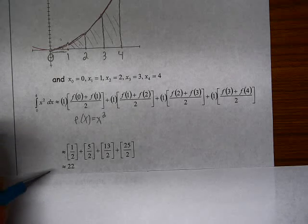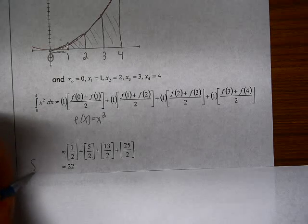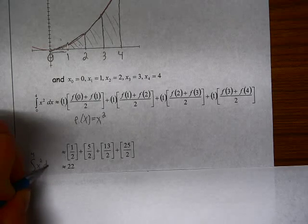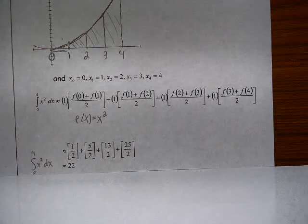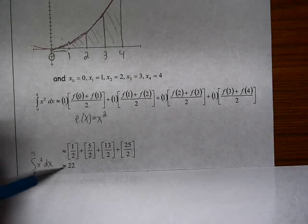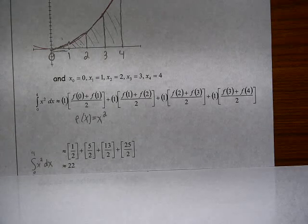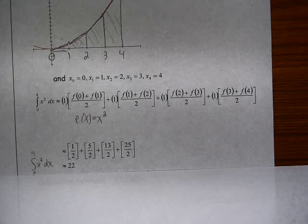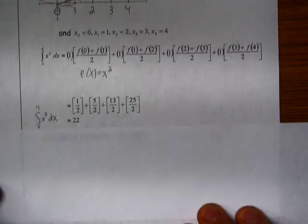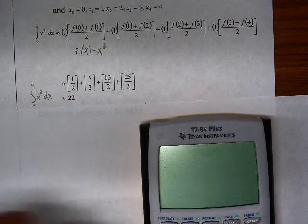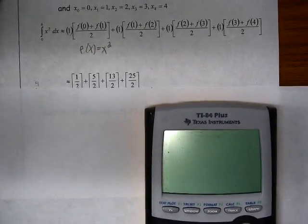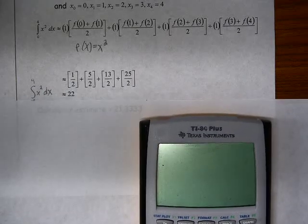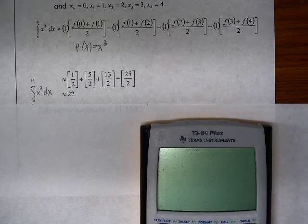So this is our trapezoidal approximation. We are saying that the definite integral of x squared from 0 to 4 is approximately equal to 22 square units. Now let's see how we can do that with our calculator. Let's take a look at that. So I'm going to put our function, the function itself,